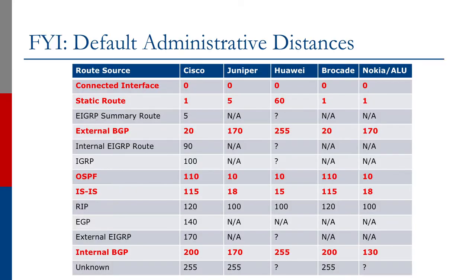We'll now talk about routing protocol admin distances. Please be mindful of various routing protocol distances as shown on the screen. eBGP by default has a lower admin distance than IBGP on Cisco devices, whereas the admin distance is the same for both Juniper and Huawei devices. You also see that eBGP by default has a lower admin distance than both OSPF and ISIS on Juniper, which is not true for Cisco and Huawei devices, which have lower admin distances for both OSPF and ISIS.